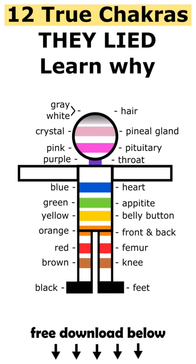This is the true order of the light spectrum: black, brown, red, orange, yellow, green, blue, purple, pink, crystal, white, gray.